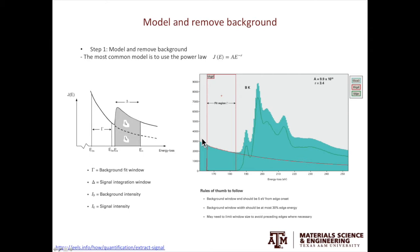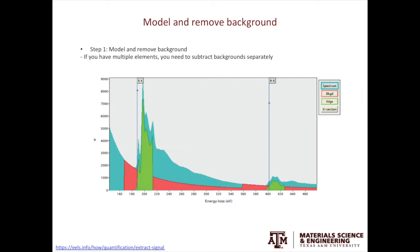The figure on the right is a real-life example. The solid green area is the raw data. The red curve is the background, and the area enclosed by the solid green line is the signal after background removal. There is a quick note here. If you have multiple edges present in the spectra, you need to model the background separately.